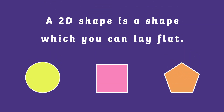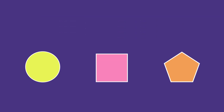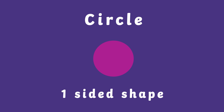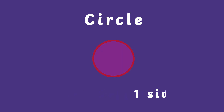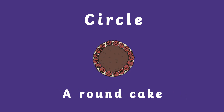A 2D shape is a shape which you can lay flat. Our first shape is a circle. It is a one sided shape. A real life example of a circle is a round cake.